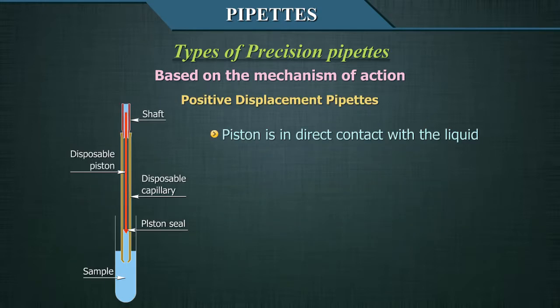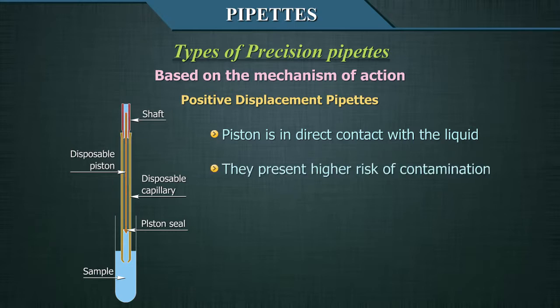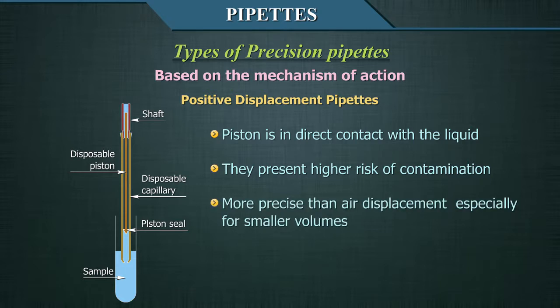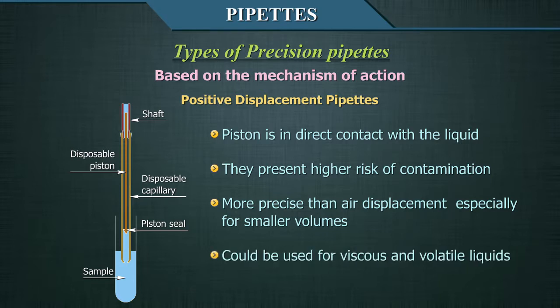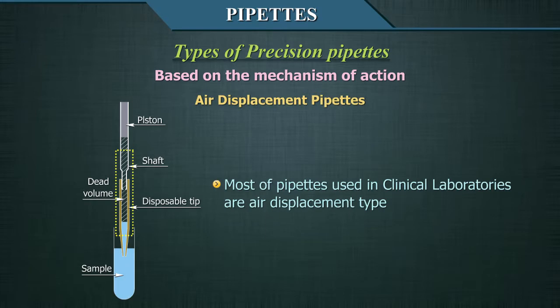Positive displacement pipettes, also called direct displacement pipettes, have the piston in direct contact with the liquid. They present a higher risk of contamination but are more precise than air displacement pipettes, especially for small volumes, and can be used for viscous and volatile liquids. Most pipettes used in the clinical laboratory are the air displacement type.